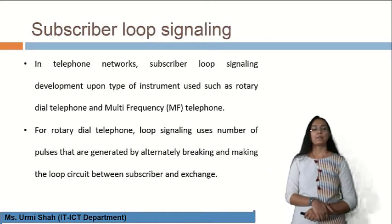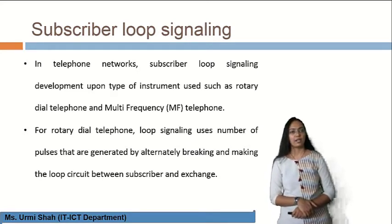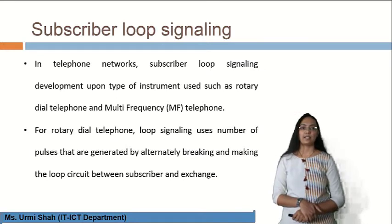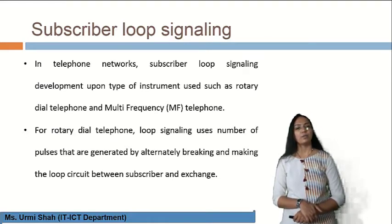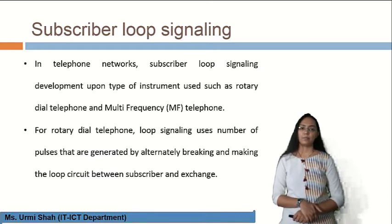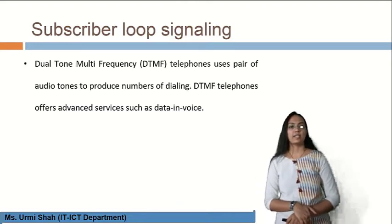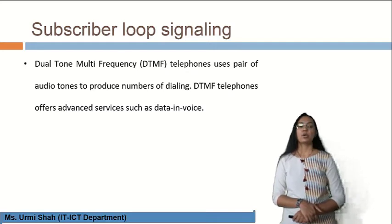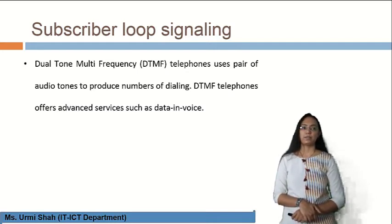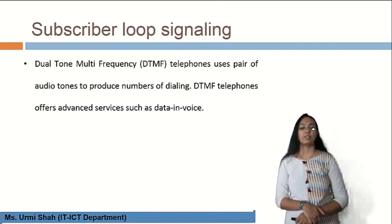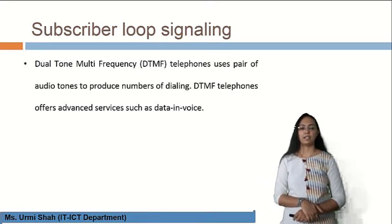The first technique is subscriber loop signaling. In telephone networks, subscriber loop signaling depends upon the type of instrument used, such as a rotary dial telephone or a multi-frequency telephone. For a rotary dial telephone, loop signaling uses the number of pulses generated by alternately breaking and making the loop circuit between the subscriber and the exchange. Dual-tone multi-frequency, that is DTMF, telephone uses a pair of audio tones to produce numbers dialed, and offers advanced services such as data and voice.